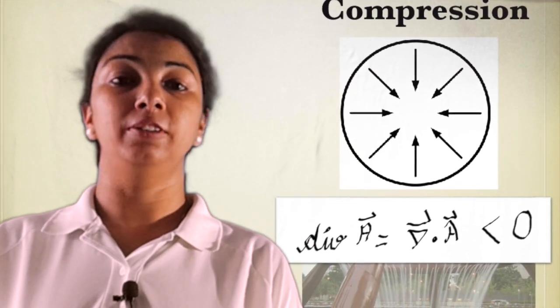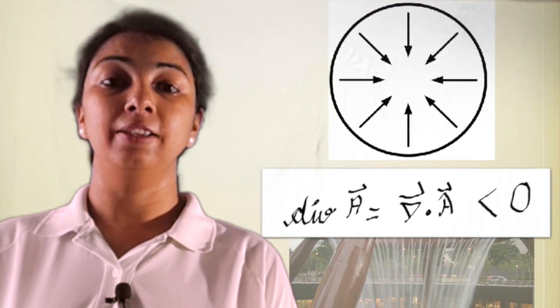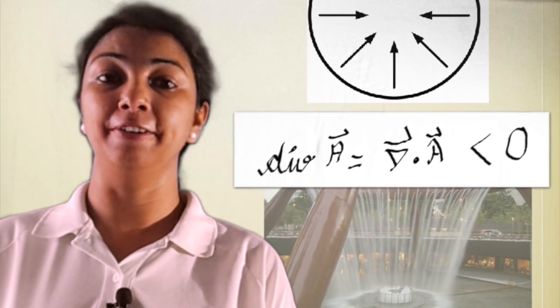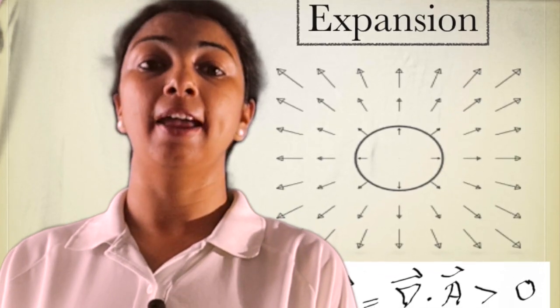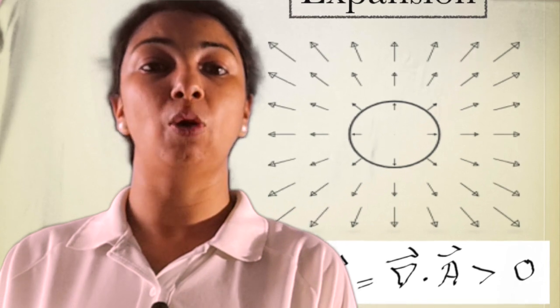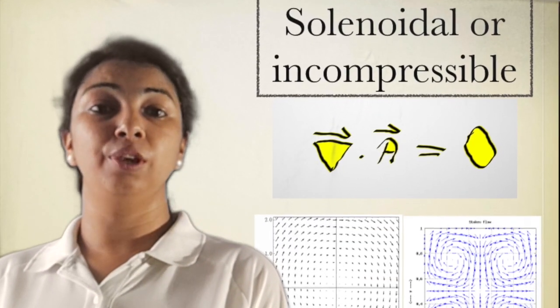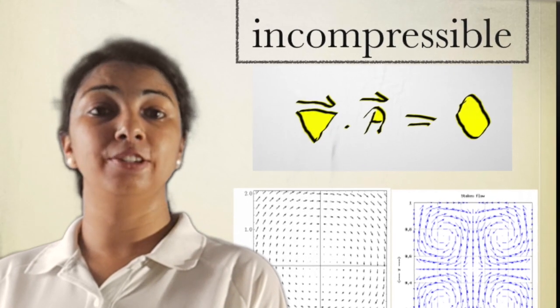The fluid flowing inward to the point is known as compression and divergence of that field is negative. The fluid or gas moved outward from the origin point is known as expansion, for example air is heated, and divergence of that field is always positive. If the scalar product is zero, that is del dot A vector equals zero, then field is called solenoidal or incompressible.